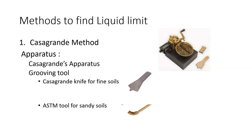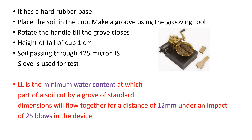The apparatus used for the liquid limit experiment is the Casagrande apparatus and the grooving tool. The Casagrande apparatus consists of a cup-shaped pan, a rotating arm, and a small foundation base. When the lever is rotated, the pan swings up and drops. The Casagrande grooving tool is used for fine soil and the ASTM tool for sandy soil. The base is a rubber base.